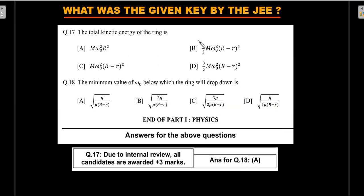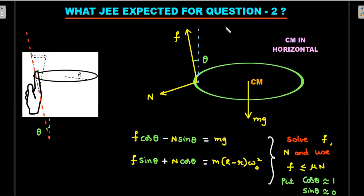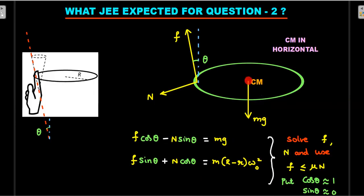Let's move to question two. JEE wanted the ring to remain horizontal. From the figure, the finger is slightly slanted, making angle theta with the vertical. The normal reaction is tilted, and friction acts along the surface of contact. The center of mass is the center of gravity, with mg acting downward. The CM goes around in a circle of radius (R minus r) as found in question one. These are the equations of motion JEE wanted students to write.